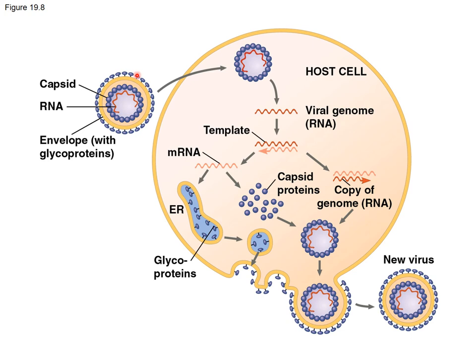The glycoproteins on the surface of the envelope bind to proteins on the surface of the host cell, allowing the virus to incorporate into the cell in a manner similar to the ways in which cells take in materials. The viral particle blends with the membrane and gets in that way. Then the genome is unpackaged — in this example it's an RNA-type virus — and the genome is exposed.